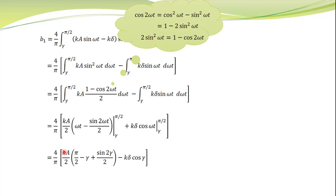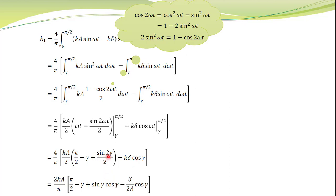Substituting the limits of integration: at ωt = π/2 we get the upper-limit terms; substituting ωt = γ gives the lower-limit terms. sin(π) = 0 so that term vanishes, leaving sin(2γ)/2. The negative signs cancel when substituting the lower limit. cos(π/2) = 0, so that term drops out, and we get −k·δ·cos(γ). Writing sin(2γ) using the identity sin(2γ) = 2·sin(γ)·cos(γ), the factor of 2 cancels with the denominator, giving sin(2γ)/2 = sin(γ)·cos(γ).